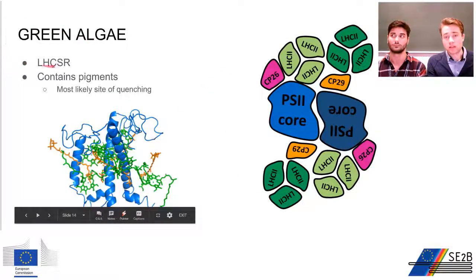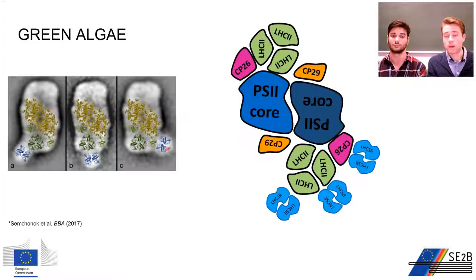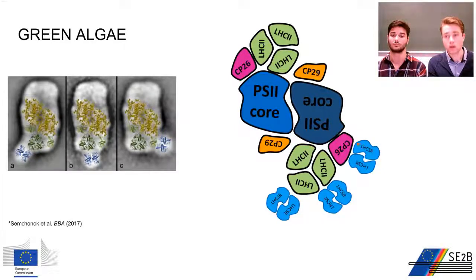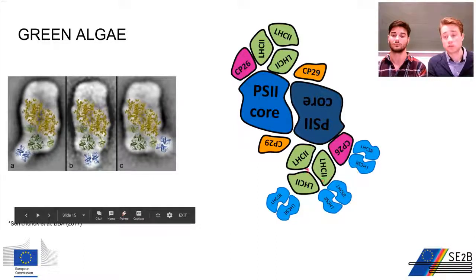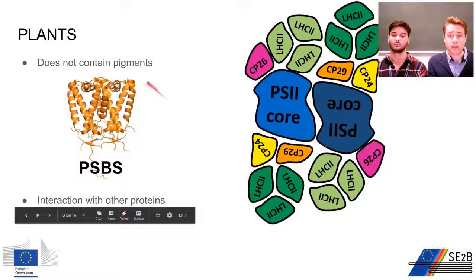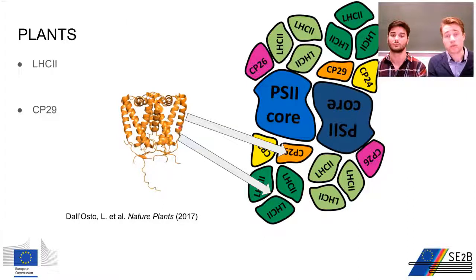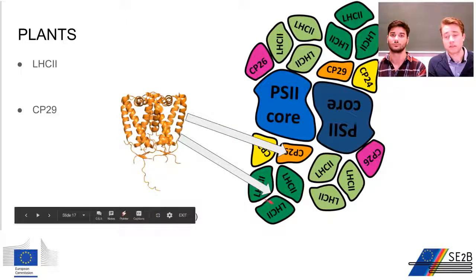In green algae, LHSR contains the pigments where quenching occurs, and from electron microscope images we can see that LHSR is bound as a dimer to either LHCII or to CP26. Therefore the excess chlorophyll excitations probably go from these antenna complexes to LHSR where the energy is quenched. In plants it is different because PsbS does not contain pigments. However, PsbS interacts with CP29 and LHCII, so the quenching most likely occurs in LHCII and in CP29 — removing these proteins eliminates the quenching.